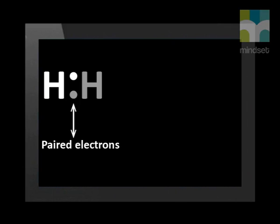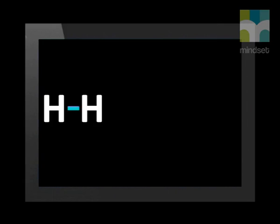One of the ways we show bonding is to use Lewis dot diagrams. An even simpler way of showing covalent bonding is by using a Cooper structure, where a straight line is drawn wherever a pair of electrons is shared.